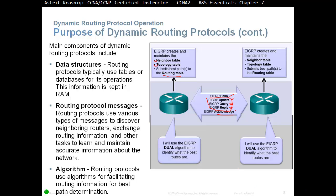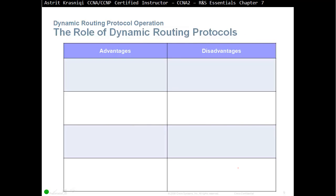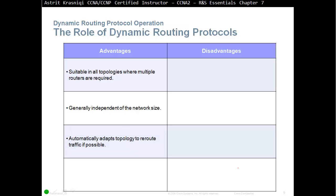The role of dynamic routing protocols — they have their own advantages and disadvantages. Advantages include being suitable in all topologies where multiple routers are required, generally independent of network size — it can be a medium, large, or even small network. It automatically adapts topology to reroute traffic if possible. If the primary path fails, it will automatically find another path. Disadvantages include being more complex to implement than static routing, and it is less secure because dynamic routing protocols exchange messages about what they know, which is considered a security risk, though additional security settings can be configured.